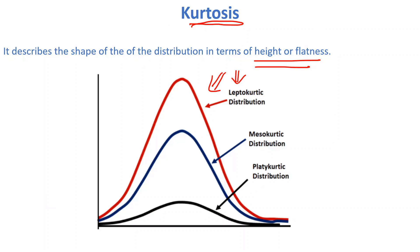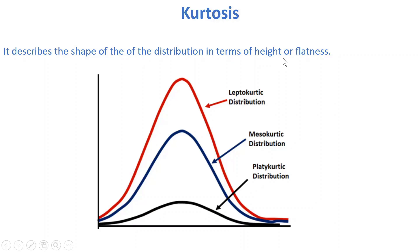Hello everyone, today we are going to discuss kurtosis, which is a measure of shape. We have already discussed symmetrical distribution, asymmetrical distribution, and skewed data sets — both positive and negative skewed. Kurtosis describes the shape of the distribution in terms of height and flatness — what type of height and flatness the data has.